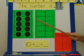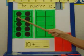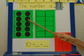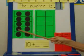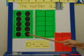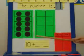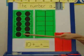1, 2, 3, 4, 5, 6, 7, 8, 9, 10. So when you see a 10 frame completely filled, it means 10.